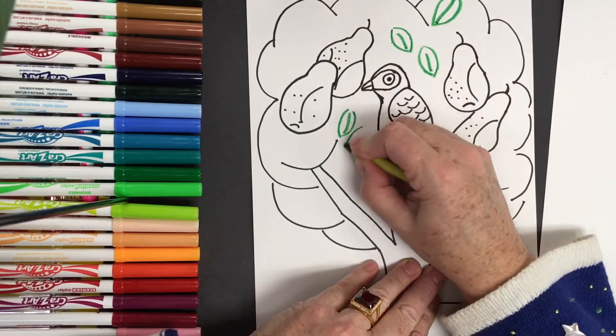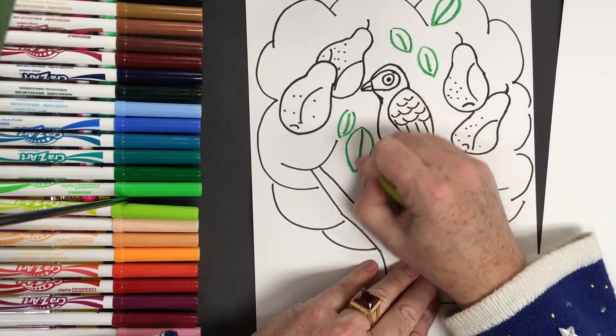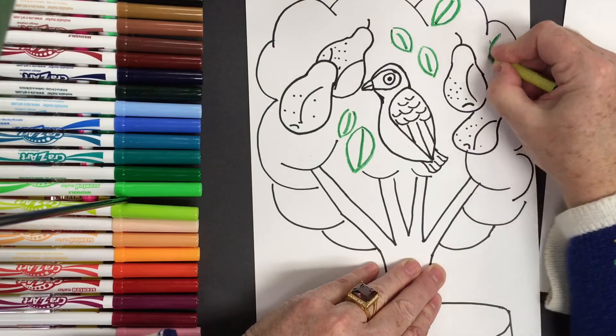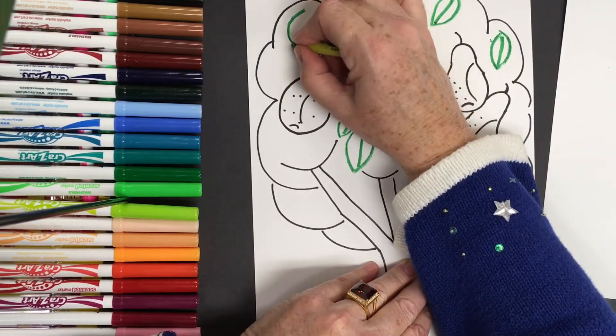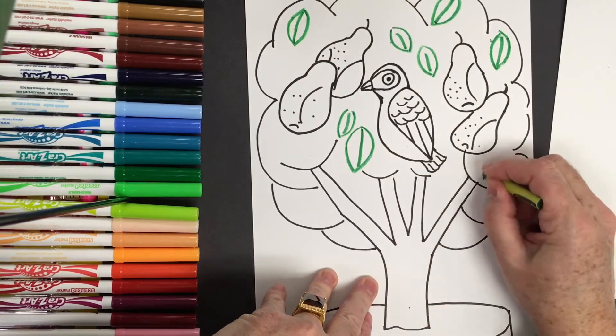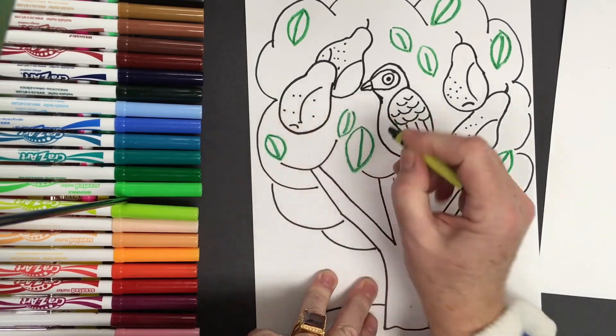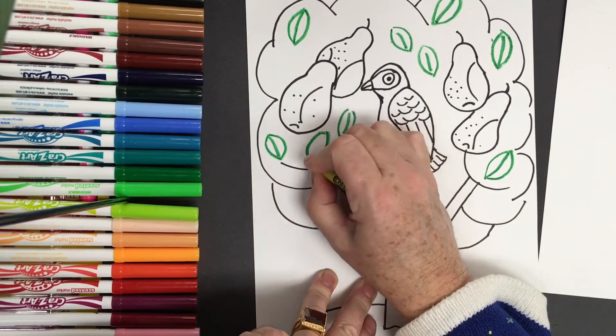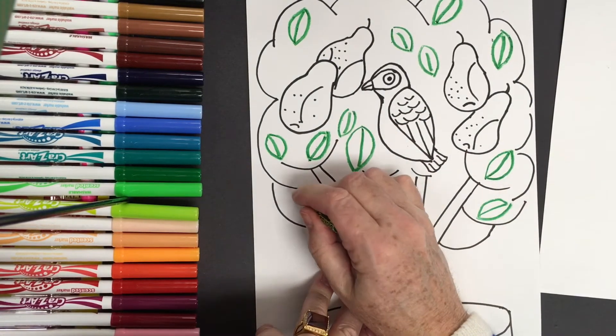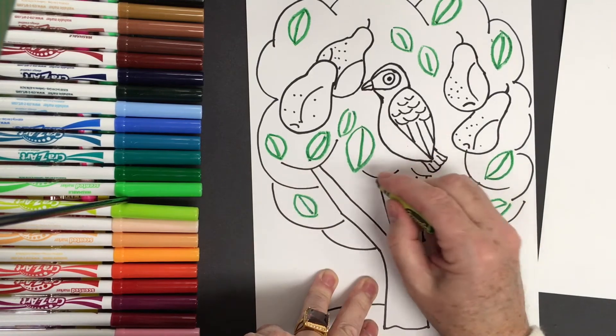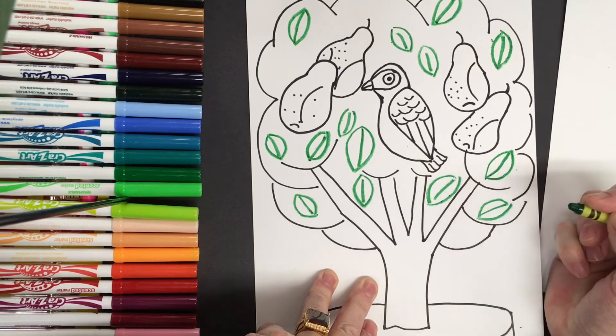So to do the leaves, I do a curve and then I curve the opposite way and put a line down the middle. Then what I'll do is I'll paint on top of this with some light green. And the pattern here will still show even though I'm putting green on top, because I'm pushing really hard. And I'll show you what this looks like when I'm done.